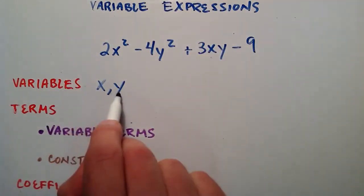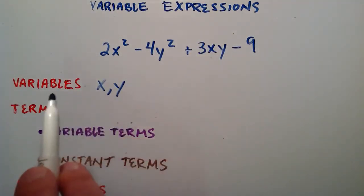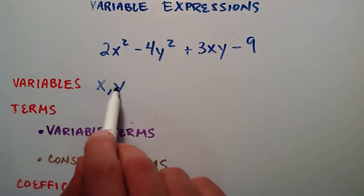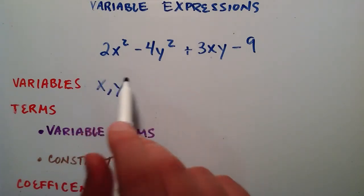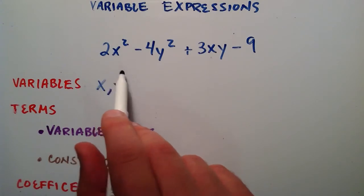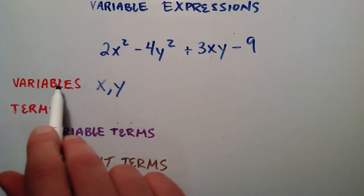What makes x and y variables is that they can take on different values, or they can vary their value. So if they vary their value, which is why we call them variables.